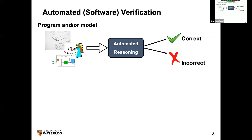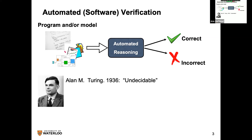Ideally, we want to build a fancy box: you take a program, maybe some spec, feed them into the box, and it automatically tells you 'you're good to go' or 'here's your bug, here's your counterexample.' That's what we always want. Unfortunately, Turing told us it's undecidable — you can't have a computer program that does this without restrictions.